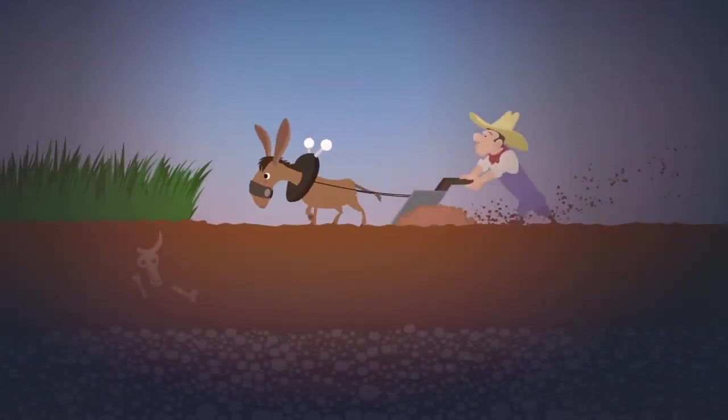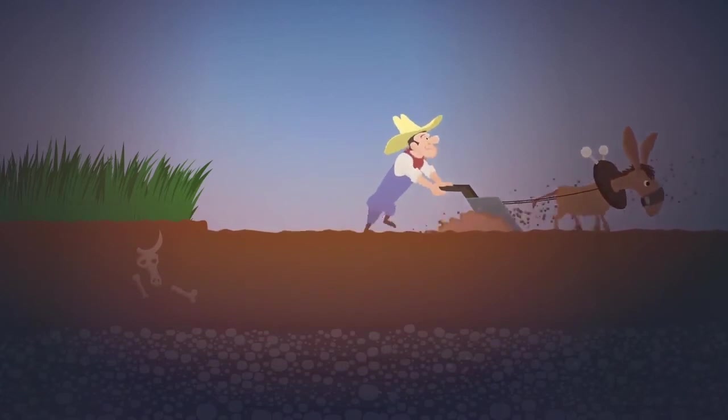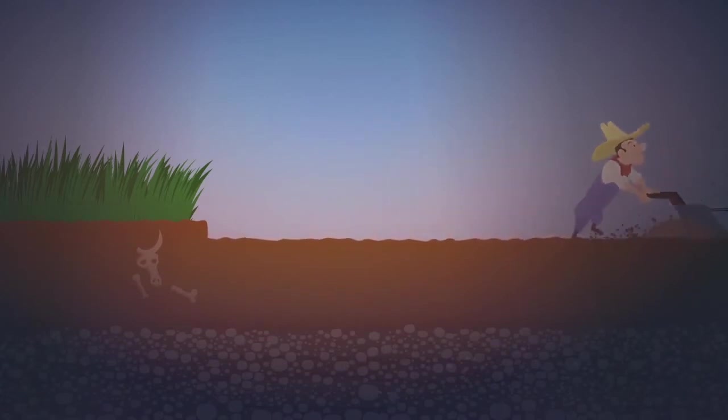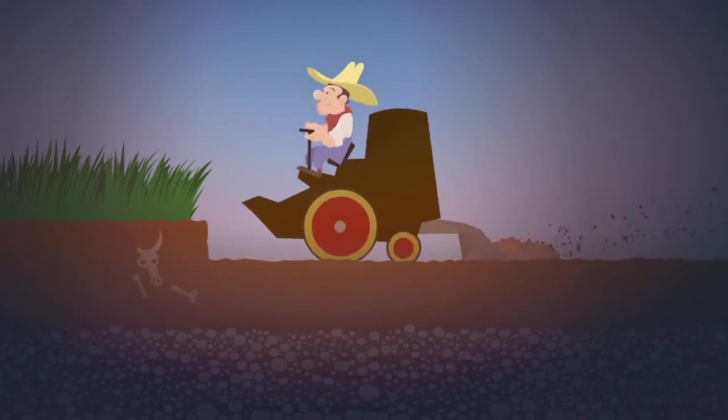Still another threat is topsoil loss. Two hundred years ago, there were six feet of topsoil on the American prairies. Today, through tillage and poor practices, approximately half is gone.